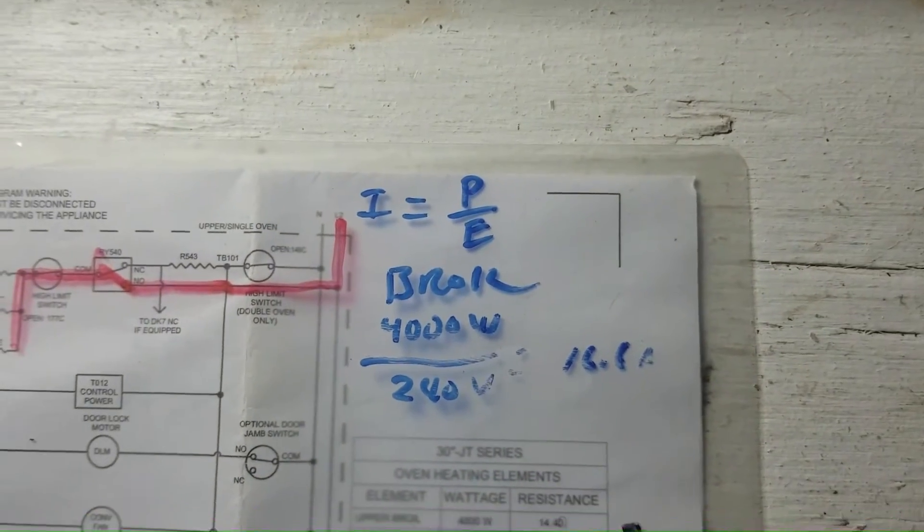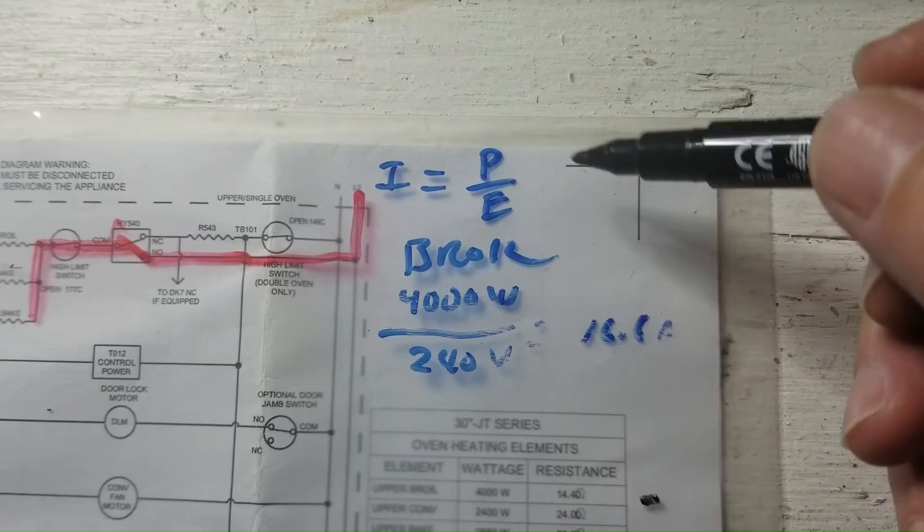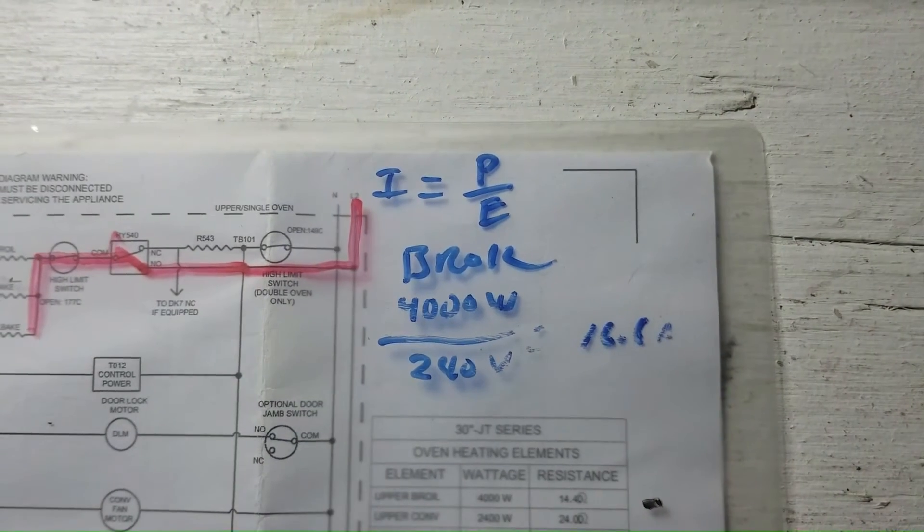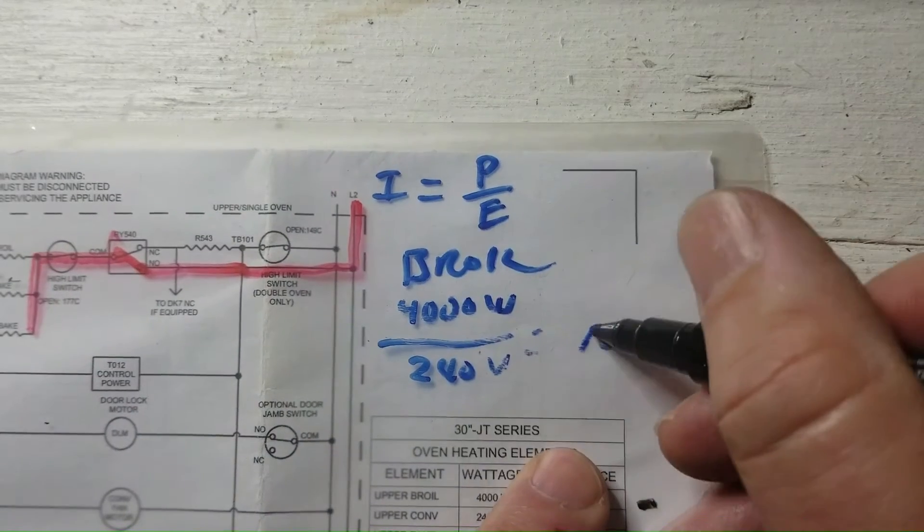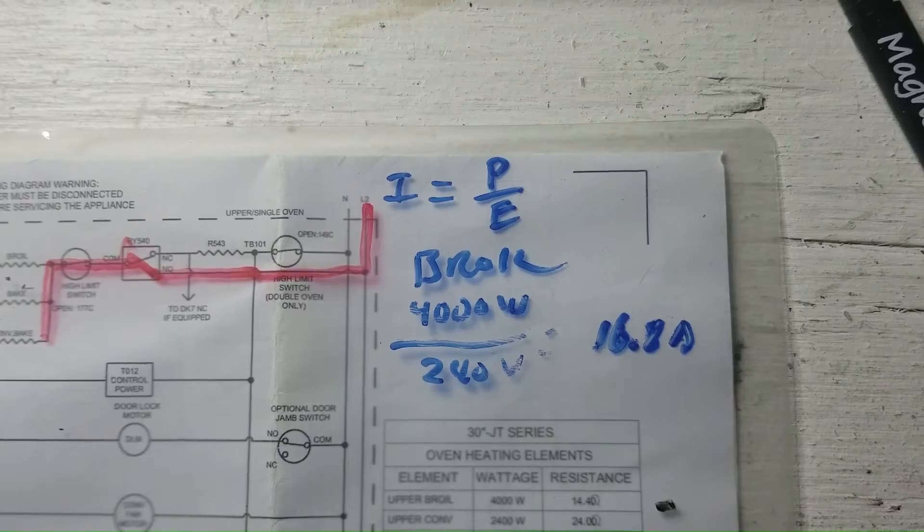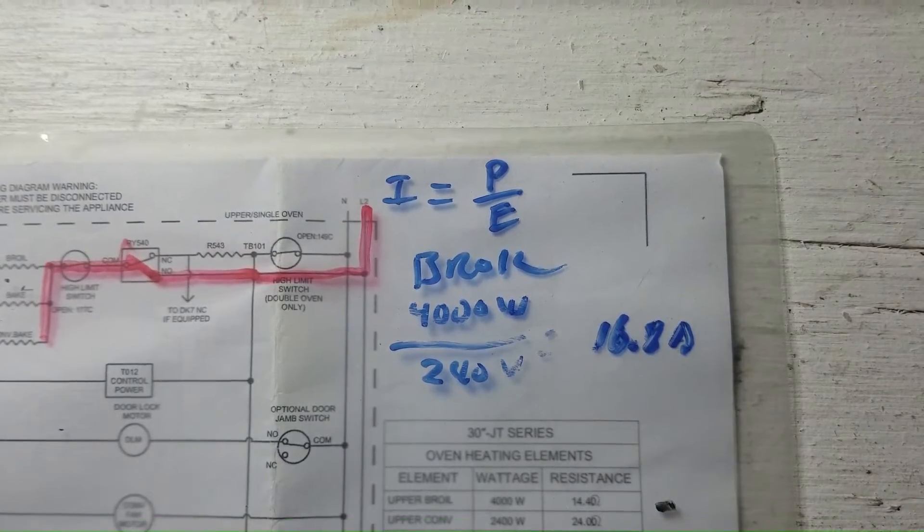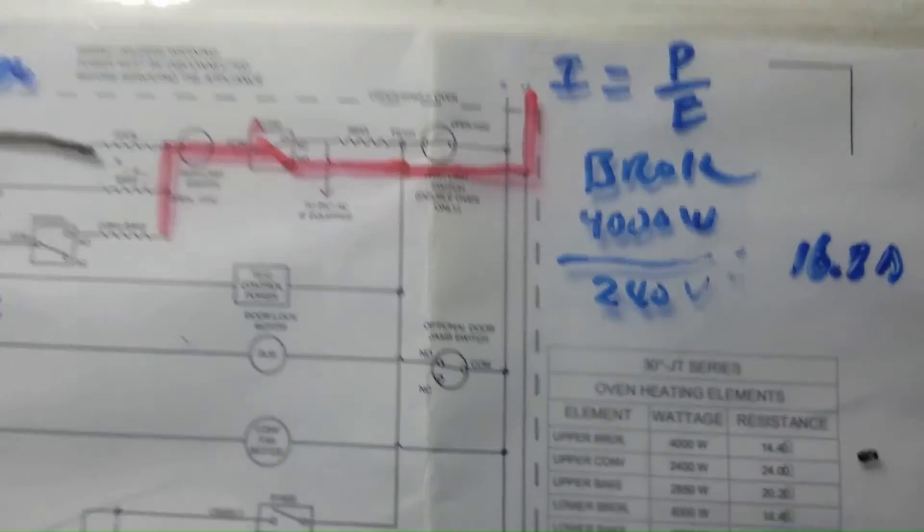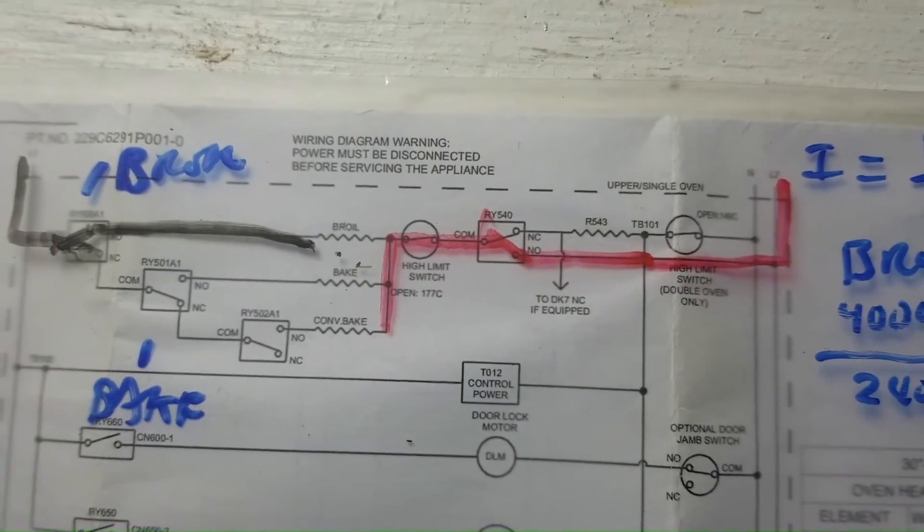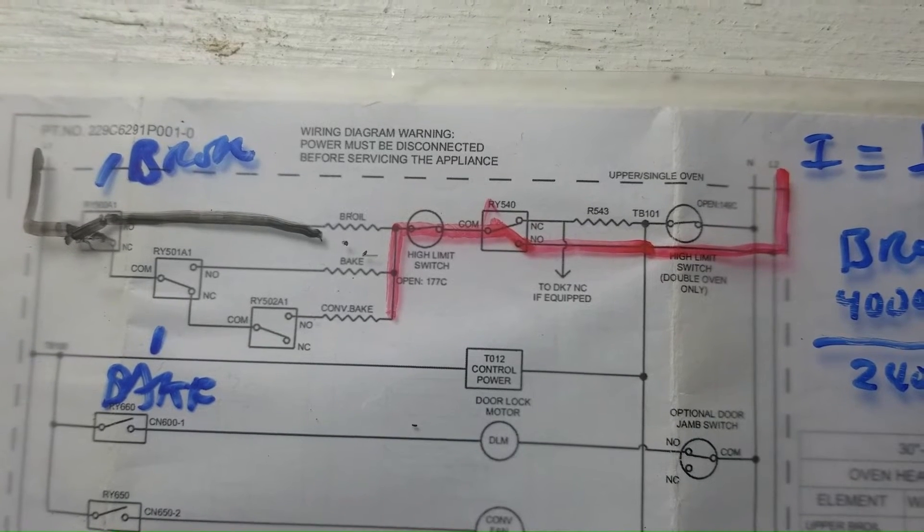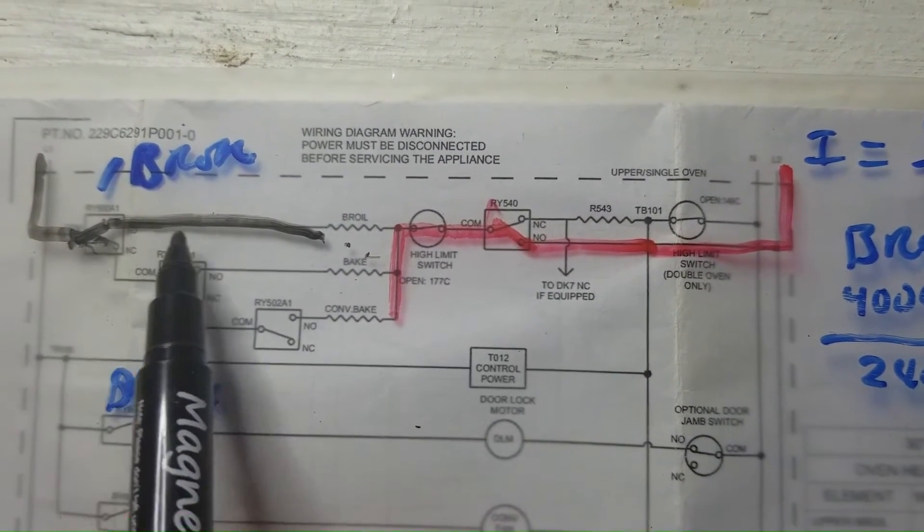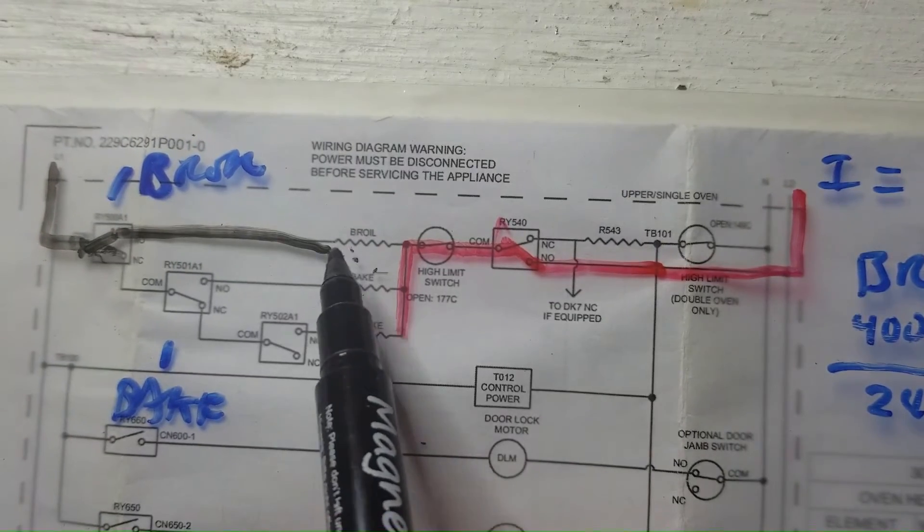Which comes out to, the current that the broil element uses, using power divided by voltage, comes out to 16.6 amps, which is very much short of the relay 30 amp capacity. But what happens is it cycles so often and uses more current than the other elements that over time the relay contacts just wear out and they start welding together.